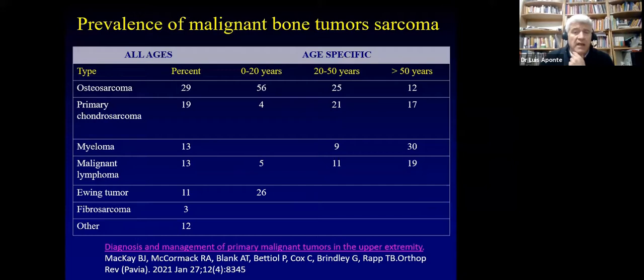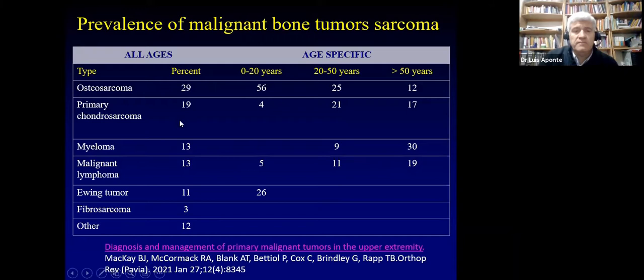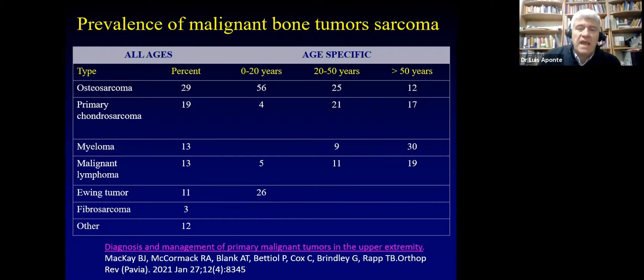A recommended paper is on the diagnosis and management of primary malignant tumors of the upper extremity. It shows that osteosarcoma is most common, followed by chondrosarcoma, then myeloma, with Ewing sarcoma as a primary bone tumor. Regarding age distribution: in patients under 20 years, osteosarcoma and Ewing sarcoma predominate; in middle age, osteosarcoma continues to be common and chondrosarcoma grows; and in older patients, chondrosarcoma and myeloma or lymphoma predominate.